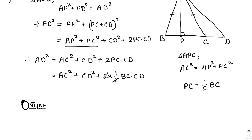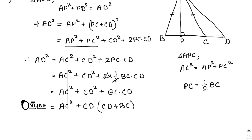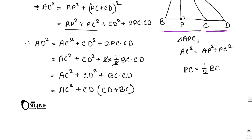Substituting PC = ½BC: 2·PC·CD = 2·(½BC)·CD = BC·CD. So AD² = AC² + CD² + BC·CD. Taking CD common from the last two terms: CD² + BC·CD = CD(CD + BC) = CD · BD, since BC + CD = BD. Therefore AD² = AC² + BD · CD. Hence it is proved.